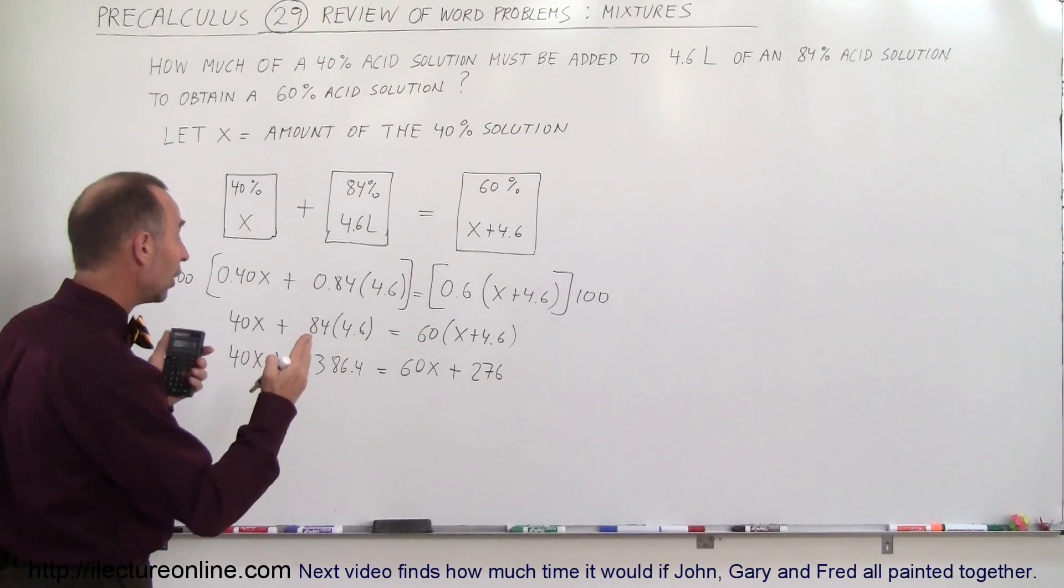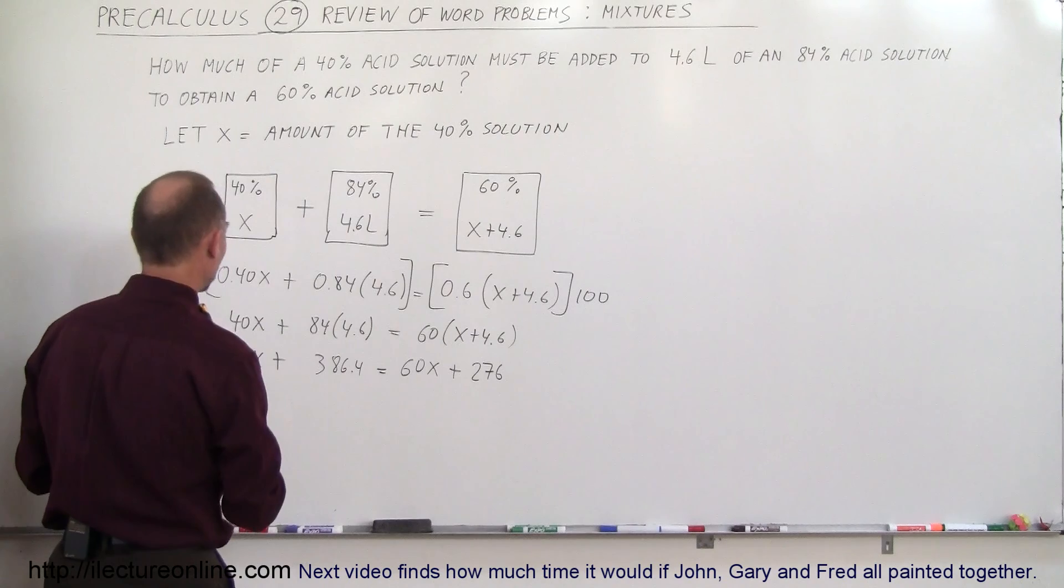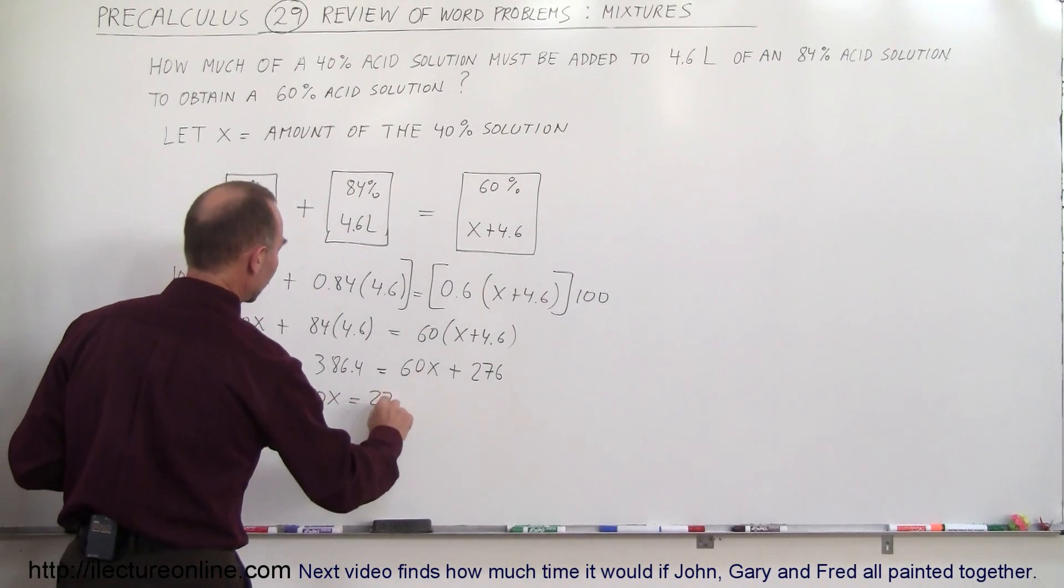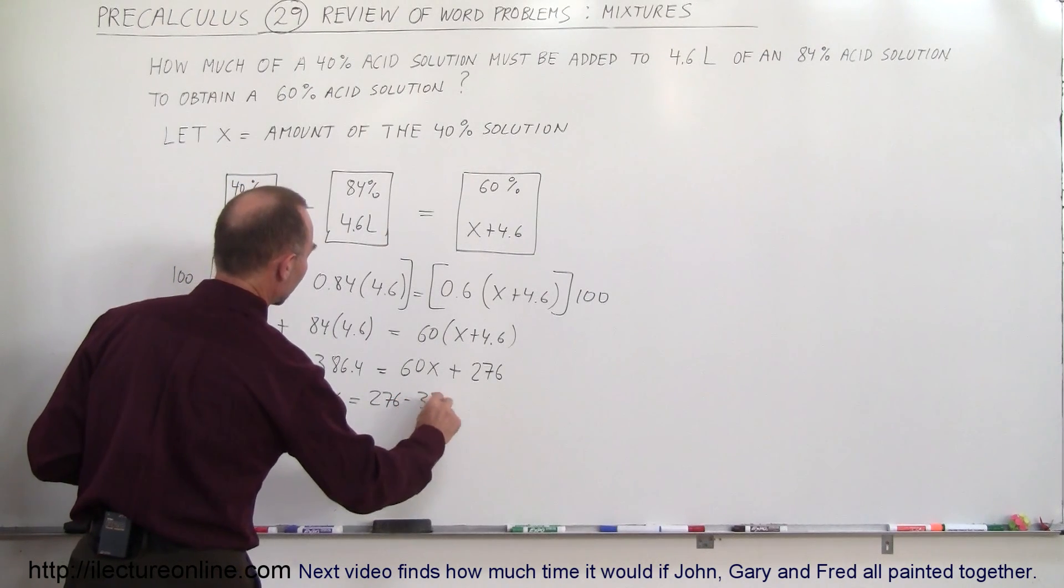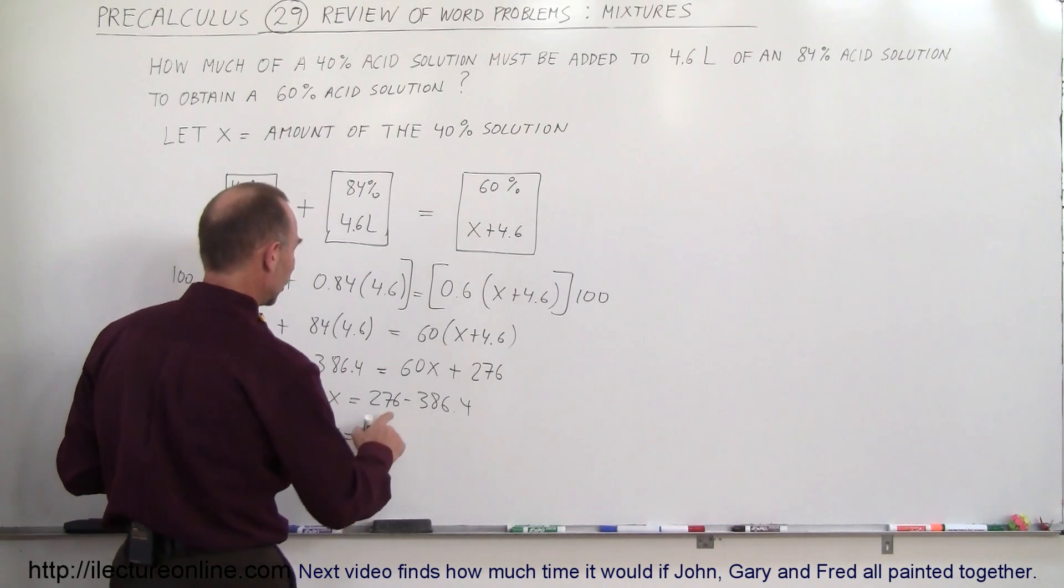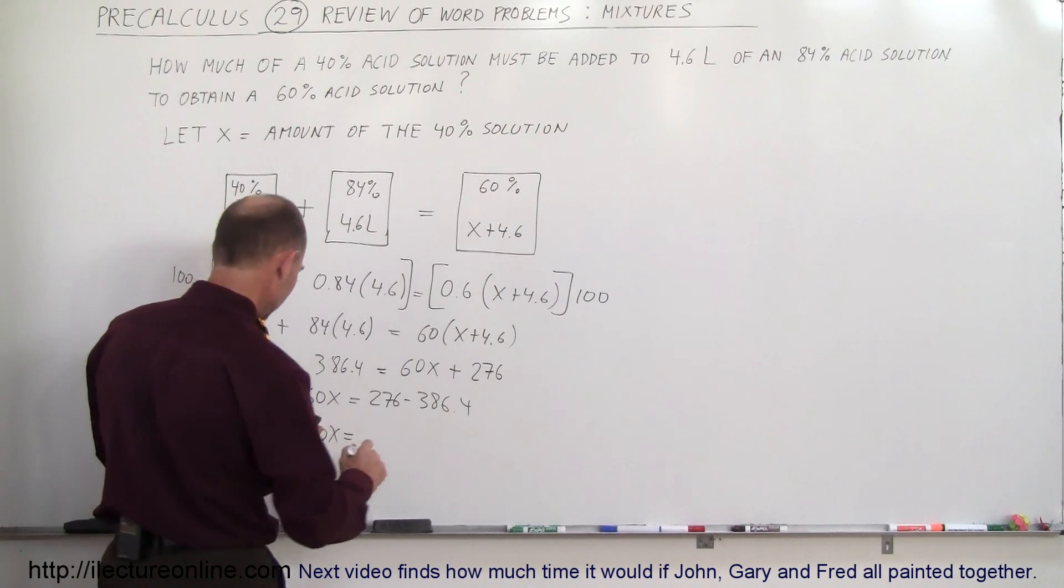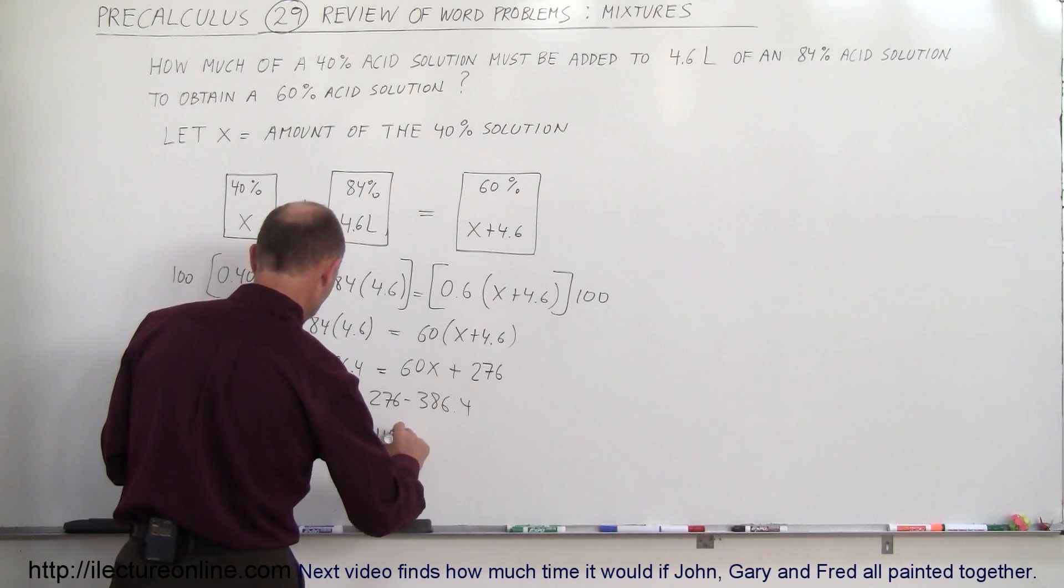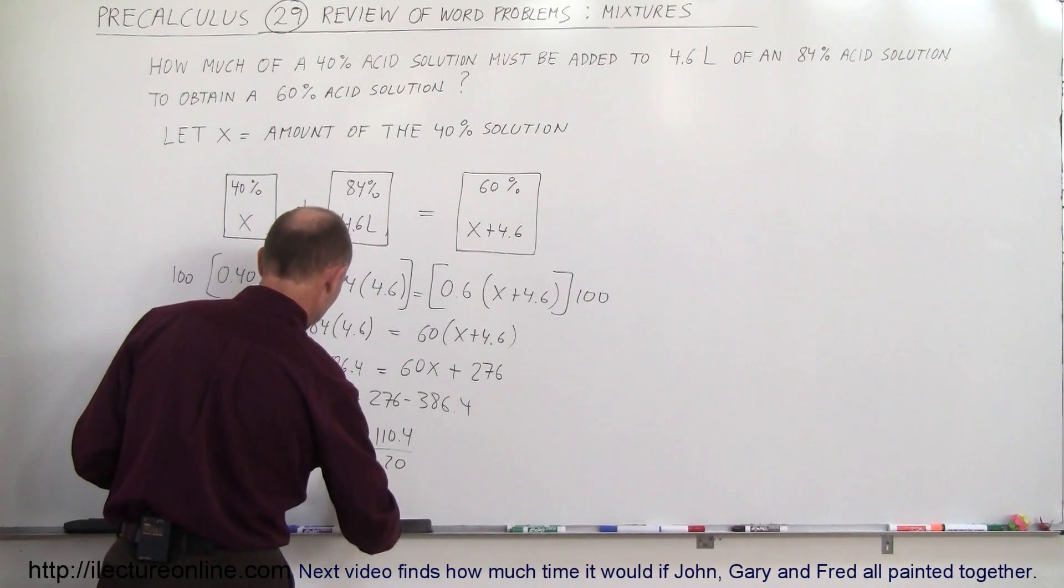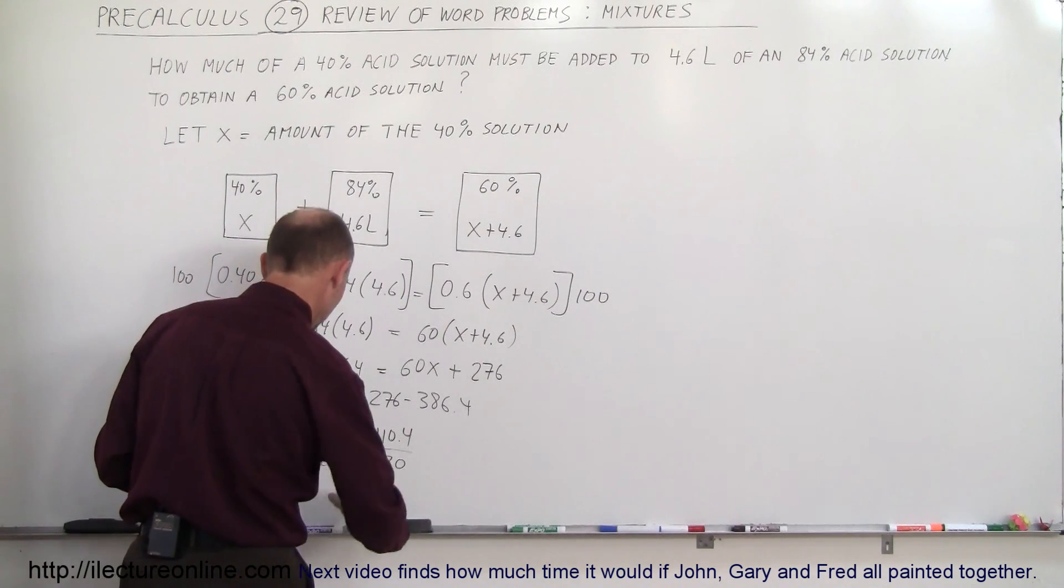Now we want to move all the variable, all the terms with an X in it to the left, everything else to the right, so then we get 40X minus 60X is equal to 276 minus 386.4. That means minus 20X equals minus 110.4. Divide both sides by minus 20, and we get X is equal to 5.52.